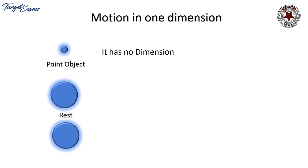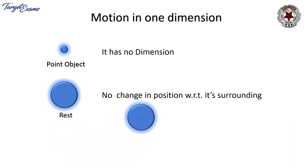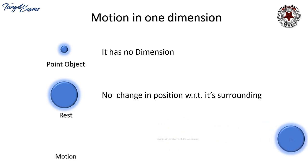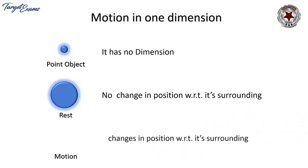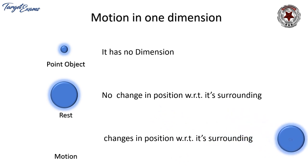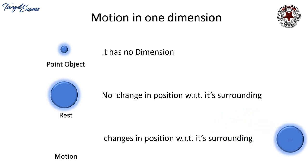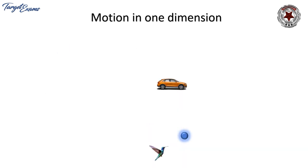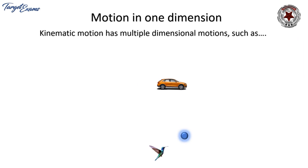A few important things in this chapter: the point object, which has no dimension. The condition of rest — when there is no change of position with respect to its surroundings, the body is said to be at rest. The body is in the condition of motion when it changes its position with respect to its surroundings.